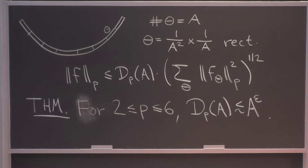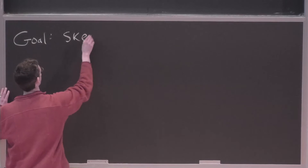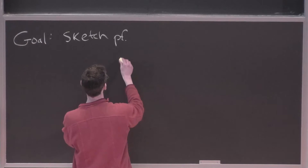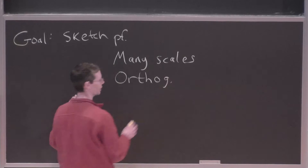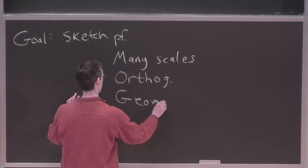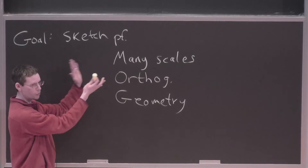The goal today is to sketch the proof of this theorem. There are three things going into it: many scales, which we talked about a lot last time; orthogonality, which is central in almost all of Fourier analysis; and a little bit of geometry, which I'll explain more. These are really the only three ingredients — elementary ingredients combined in a really nice way that prove this theorem.